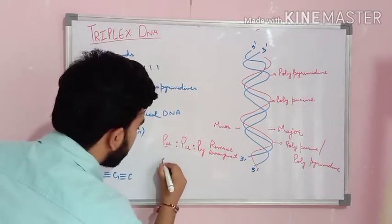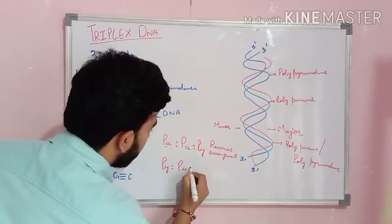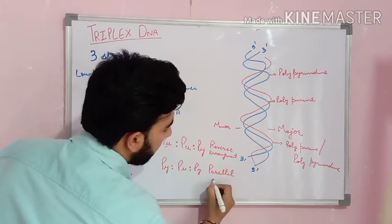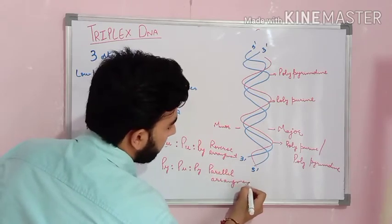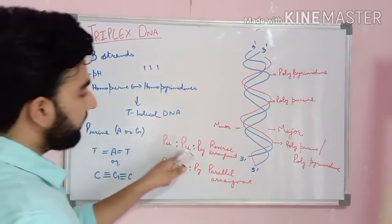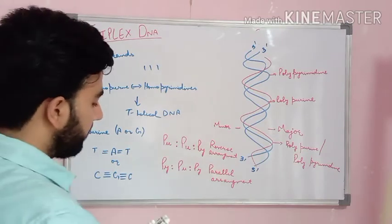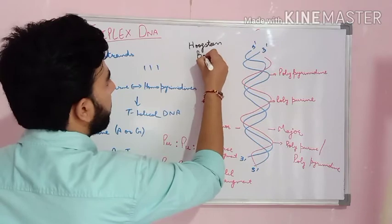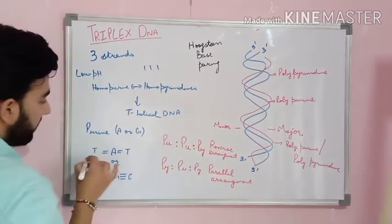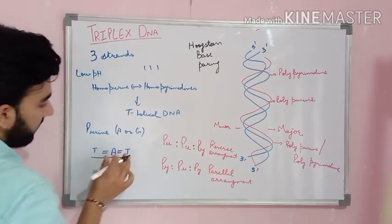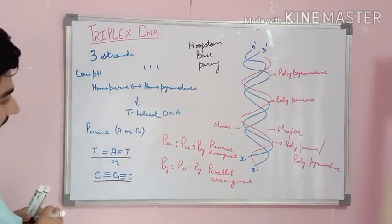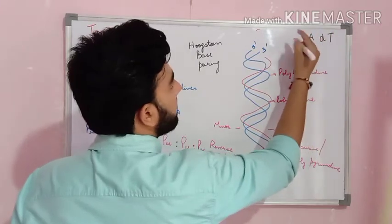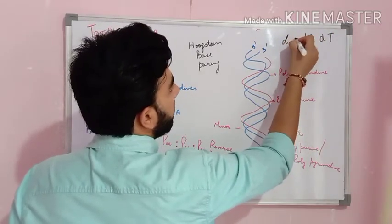If the third strand is a purine strand, then the structure formed will look like a parallel arrangement. The bond formed between the three different nucleotide bases is known as Hoogsteen base pairing. This type of base pairing formed between these molecules is known as Hoogsteen base pairing, and when we write it in this form, the third strand is always written in italics.